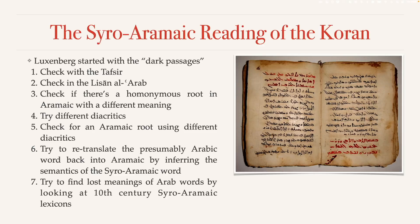In step six, he assumes the word is Arabic but a lost Arabic word. He tries to retranslate it back into Aramaic by inferring the semantics of the Syro-Aramaic word. Since there are systematic rules between Arabic and Aramaic, one can infer how the corresponding Aramaic word would look. He says this is the most important, most extensive, but also the most difficult step, because it moves into completely uncharted territory requiring a very good grasp of both Arabic and Aramaic.